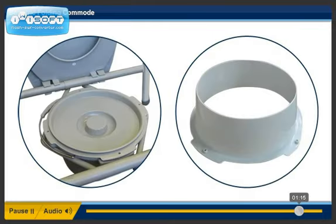Step 9. Raise the cover and seat to place the bucket or the splash guard into the bucket bracket. The splash guard is in use when the commode is being used over the toilet.